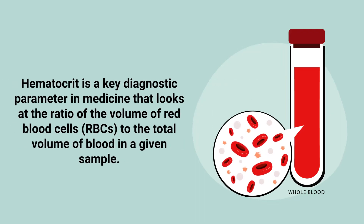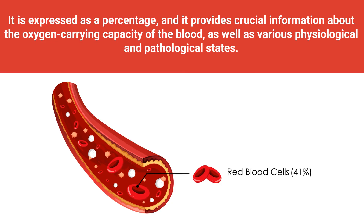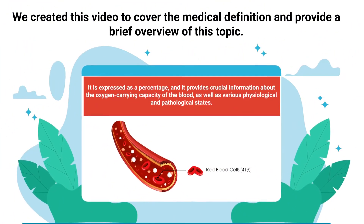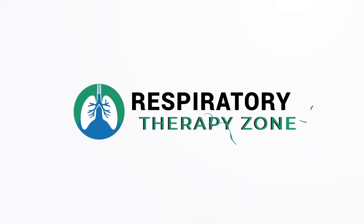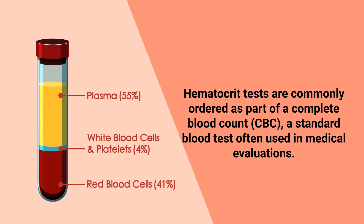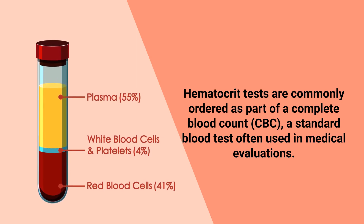Hematocrit is a key diagnostic parameter in medicine that looks at the ratio of the volume of red blood cells to the total volume of blood in a given sample. It is expressed as a percentage and provides crucial information about the oxygen-carrying capacity of the blood, as well as various physiological and pathological conditions. Hematocrit tests are commonly ordered as part of a complete blood count, a standard blood test often used in medical evaluations.